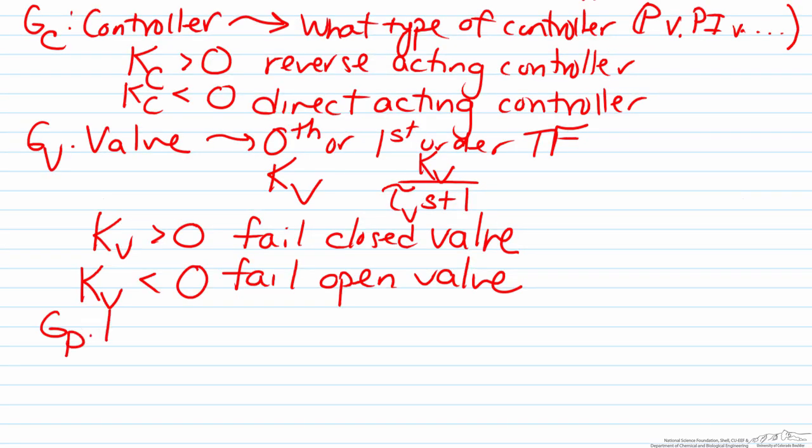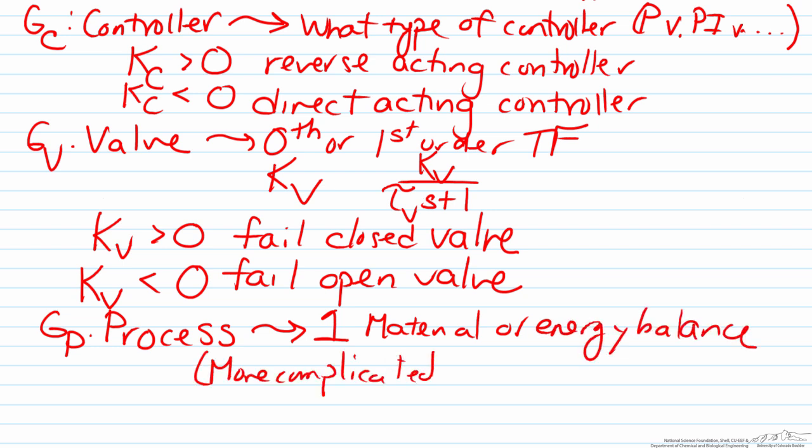Finally, GP, the last transfer function block represents the process. For an example as simple as the one we have here where there is only one process transfer block, this will represent usually one material or energy balance. However, more complicated systems may have more material and or energy balances.